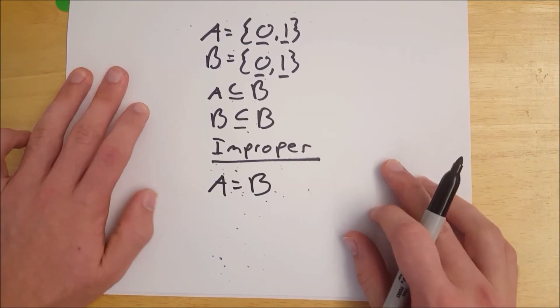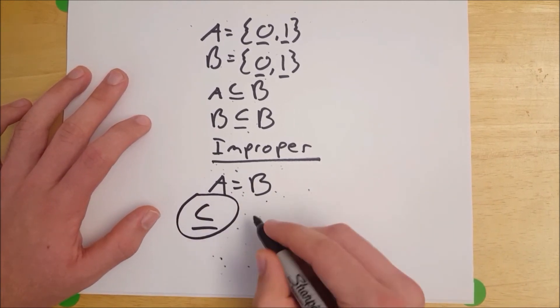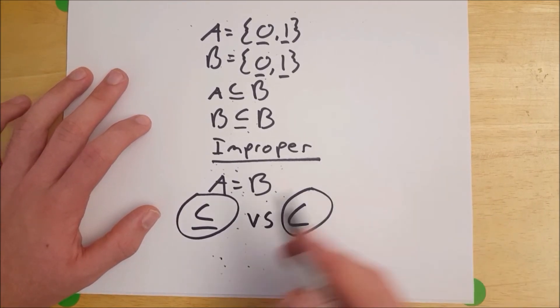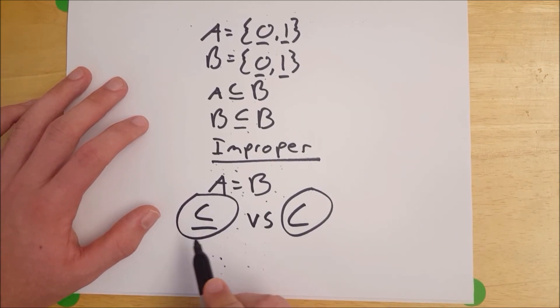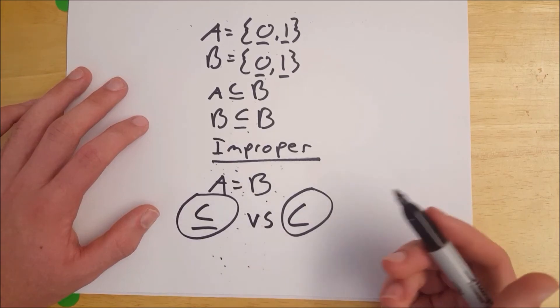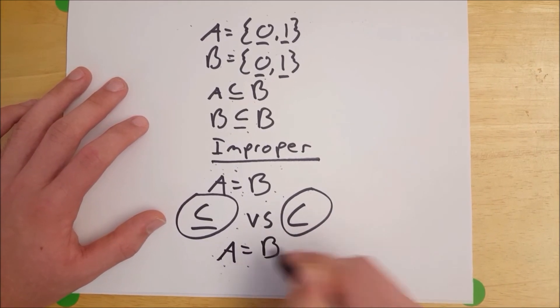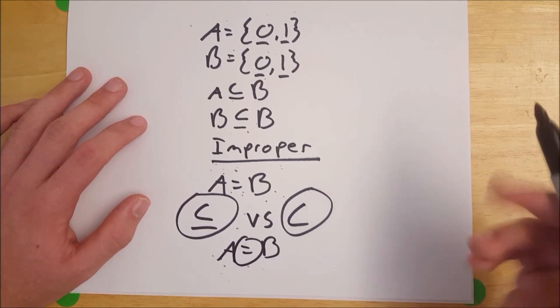Hope that helped explain improper subset versus proper. And it's important to recognize that this means improper or proper, and this means proper. This doesn't explicitly mean improper. Of course, if you wanted to say that, you could just say equals. So if you're talking about two sets and the two sets are equal, you know that they are both improper subsets of each other.